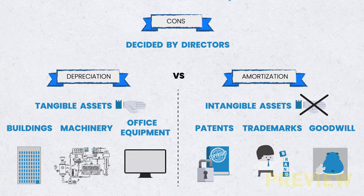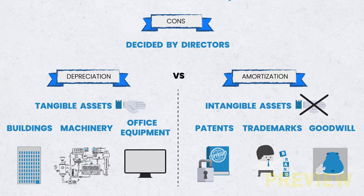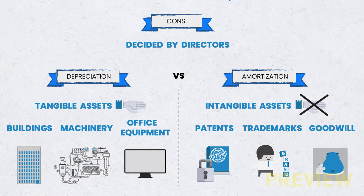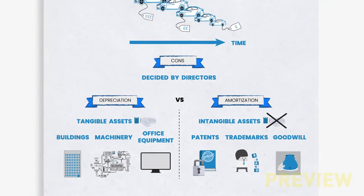The cons of depreciation: the rate of depreciation is decided by the directors. This means they can agree on a rate that benefits them in regards to tax charges on net profit, or by making their profits look much bigger than they are by underestimating the rate of depreciation. Because the methods used to ascertain depreciation are based on guesstimates by directors.